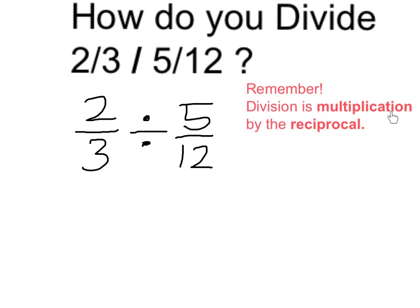I'm going to change this to multiplication by the reciprocal. And my new problem is going to be two-thirds times 12 over 5. So I took the reciprocal of 5 twelfths, which is 12 fifths.